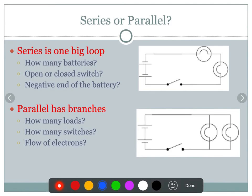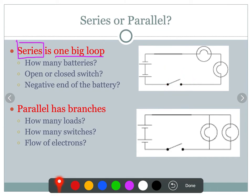Let's look at the difference between a series circuit and a parallel circuit. A series circuit is one big loop — there is only one path for the electrons to flow. Looking at this diagram, the switch is open, so electrons would not be flowing through it. This diagram has two batteries — one here and one here. The negative end is always the short end, and the positive end is always the long end.